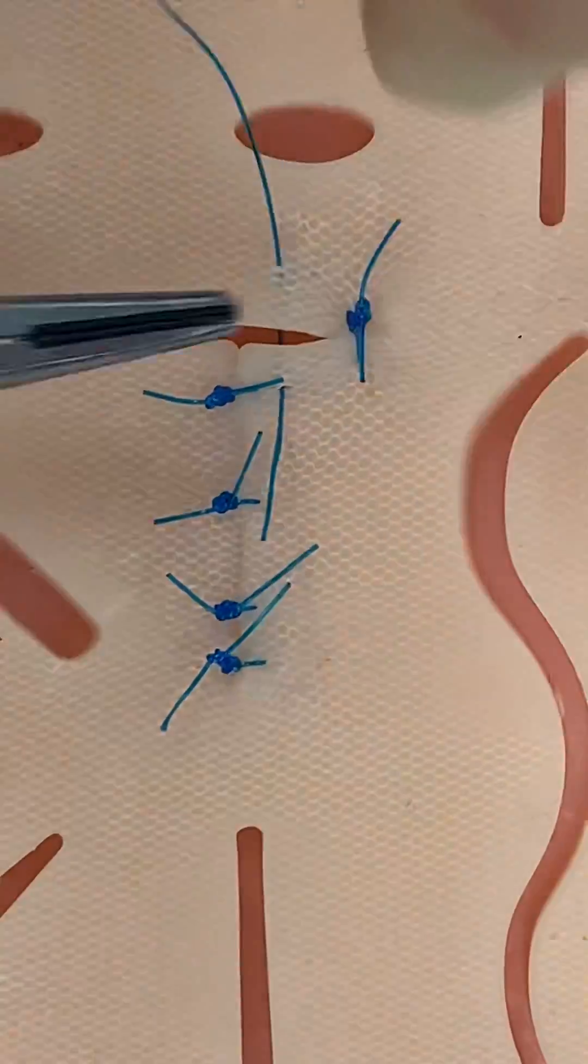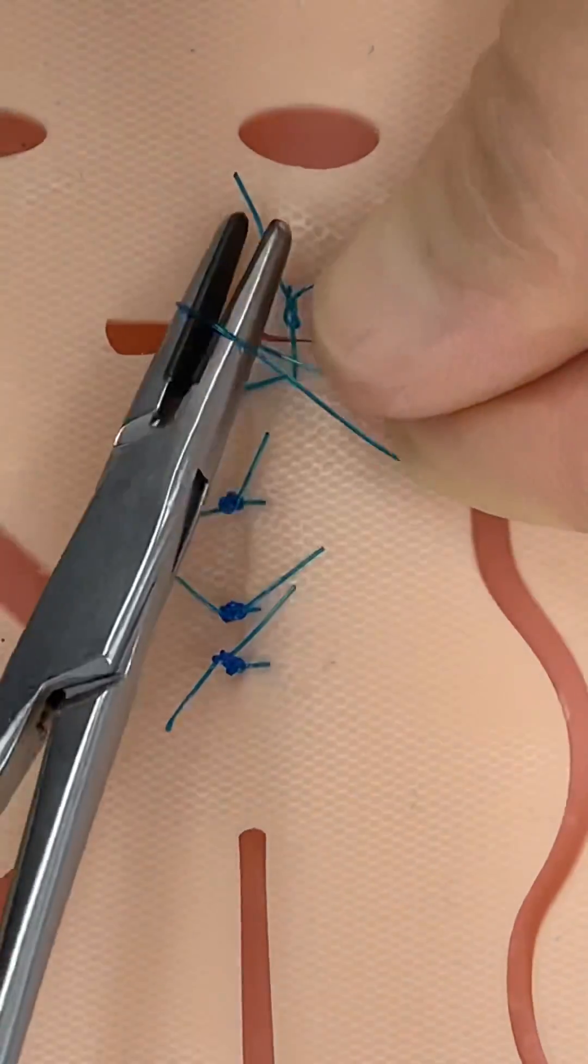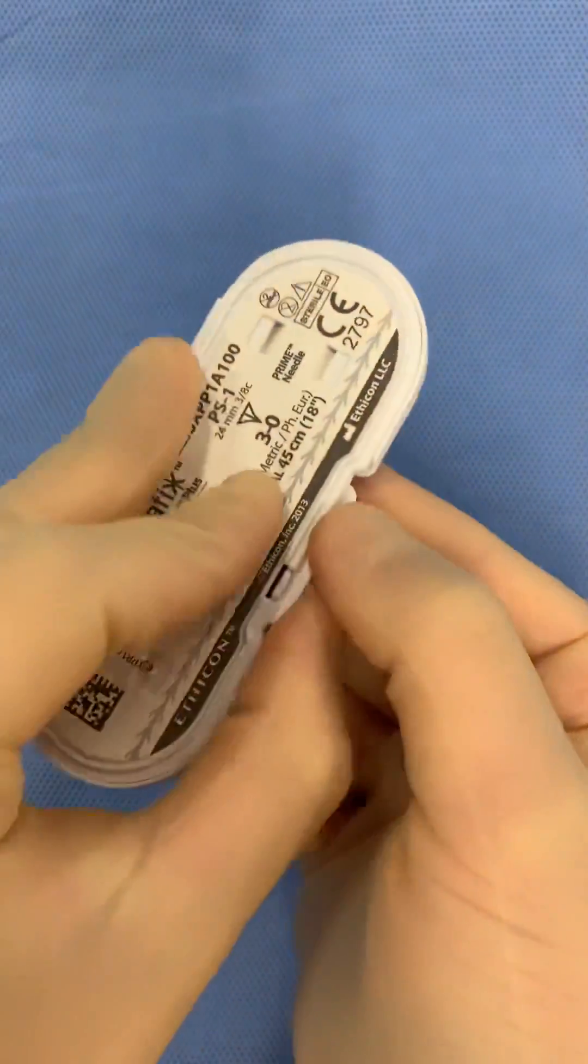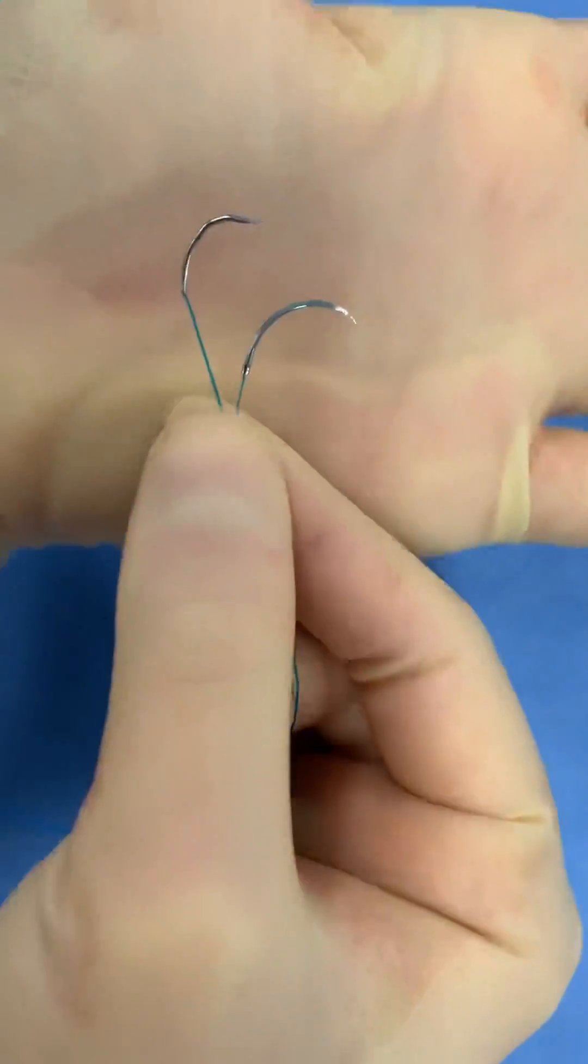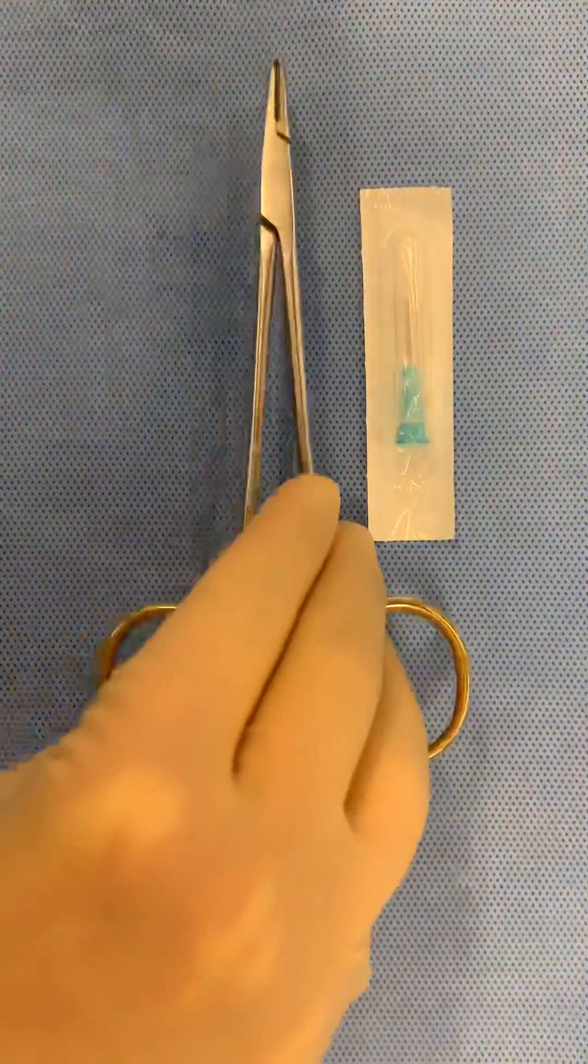Knowing how to give stitches can be a useful skill in an emergency, but you should also know how to improvise if you don't have access to fancy suture material. So here's how you can make a DIY swaged suture needle in under 2 minutes.